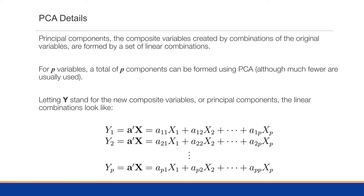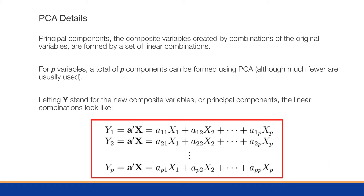The principal components are composite variables created by linear combinations of the original variables. For P variables we can form a total of P components, but in the end we only use a few. Let Y stand for these new composite variables. The linear combinations look like Y1 equals A-transposed times X, so Y1 equals a11·x1 plus a12·x2 all the way to a1p·xp. We will form P of these functions — so if we have 40 variables we will have 40 formulas.